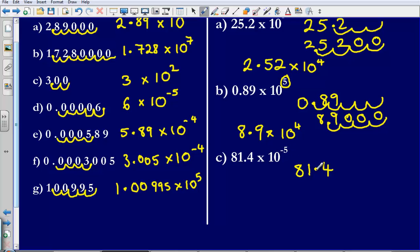So I'm moving that decimal place backwards 1, 2, 3, 4, 5 places. And so that means that I've got a number of 0.00814.